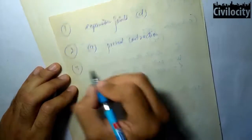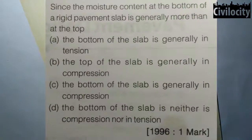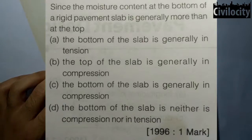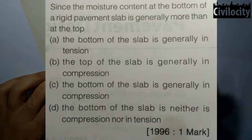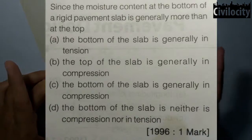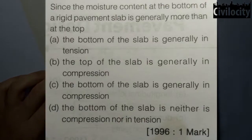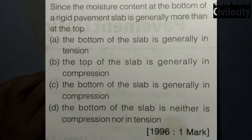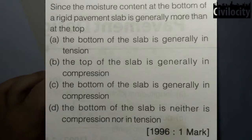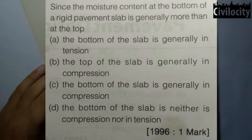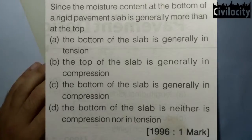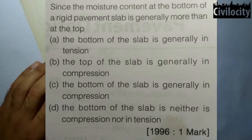The next question states that since the moisture content at the bottom of a rigid pavement slab is generally more than at the top, which condition holds? Option A: the bottom of the slab is generally in tension — yes, that can be true. Option B: the top of the slab is in compression — no. Option C: the bottom in compression — no. Option D: the bottom is neither in compression nor tension — no. The bottom of the slab is generally in tension, so A is correct.